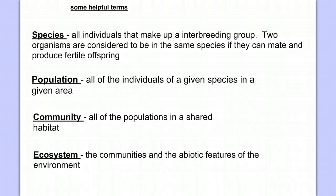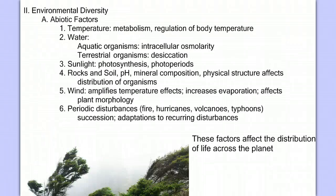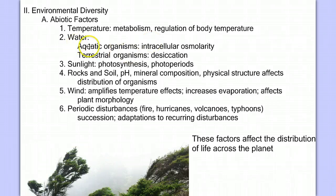Since ecology includes both living things and their nonliving environment, let's take a look at the abiotic or nonliving factors that lead to the vast environmental diversity that exists on the planet. These factors include temperature. The temperature of an environment will affect what kinds of organisms can inhabit an area. We know that metabolic rate is affected by temperature due to the sensitivity of enzymes to temperature. Some organisms can regulate their body temperatures and therefore can withstand a broader range of habitat. Water is an essential factor in life. For aquatic animals, they must deal with the movement of water in and out of their cells as dictated by the relative concentration of solutes or osmolarity.